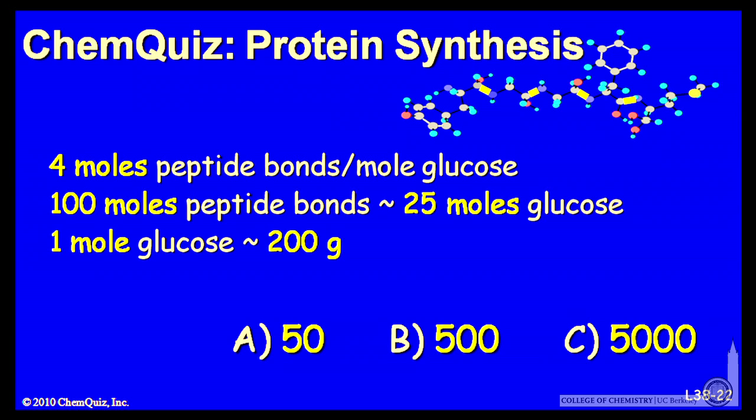And 25 moles of glucose at about 200 grams per mole is around 5,000. So 5,000 grams of glucose are required to make a mole of serum albumin.